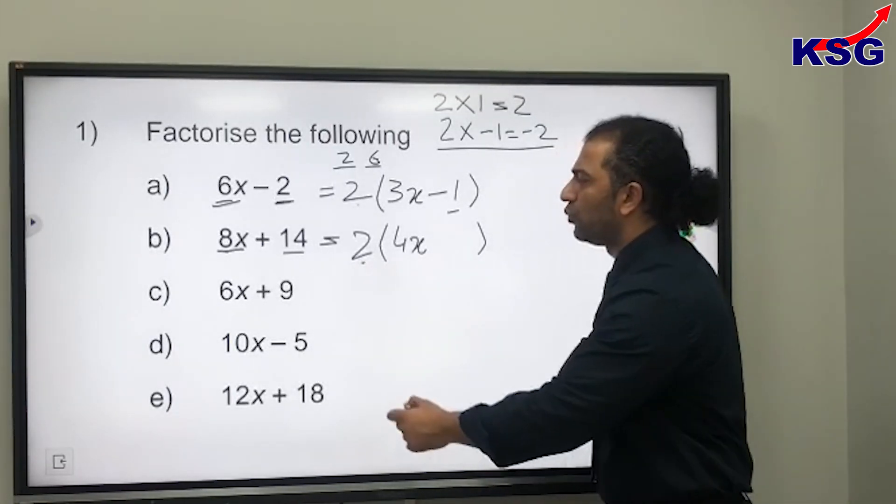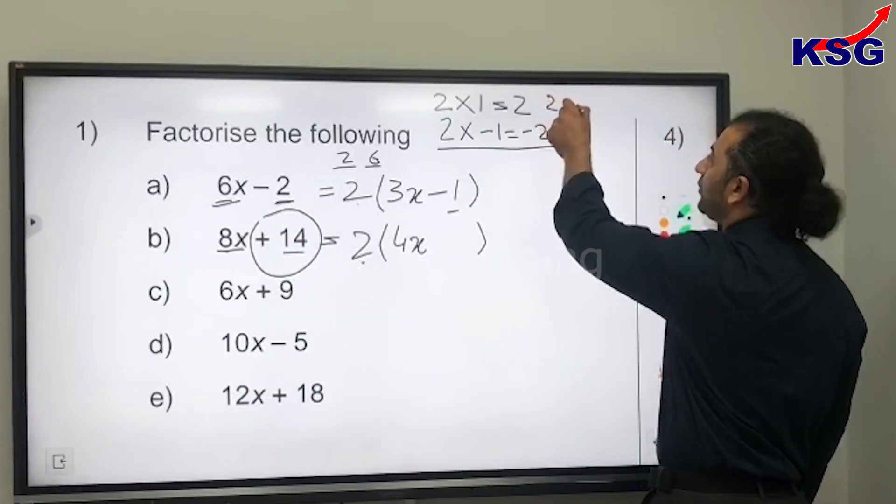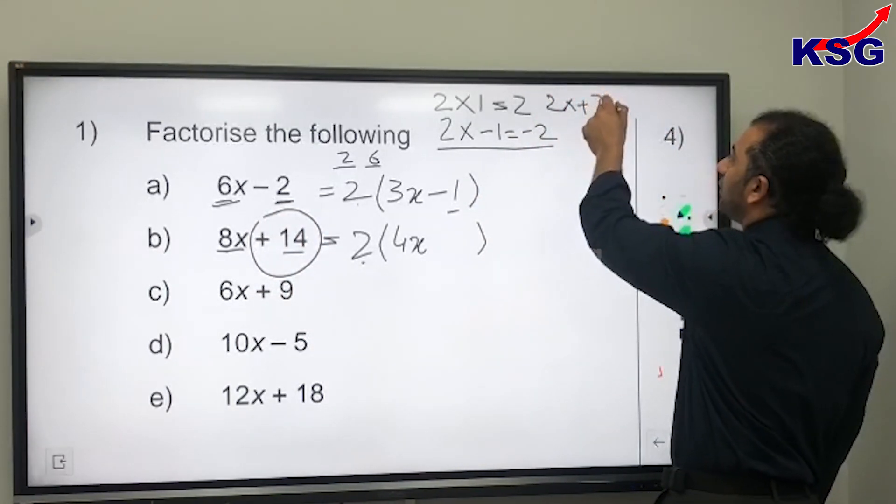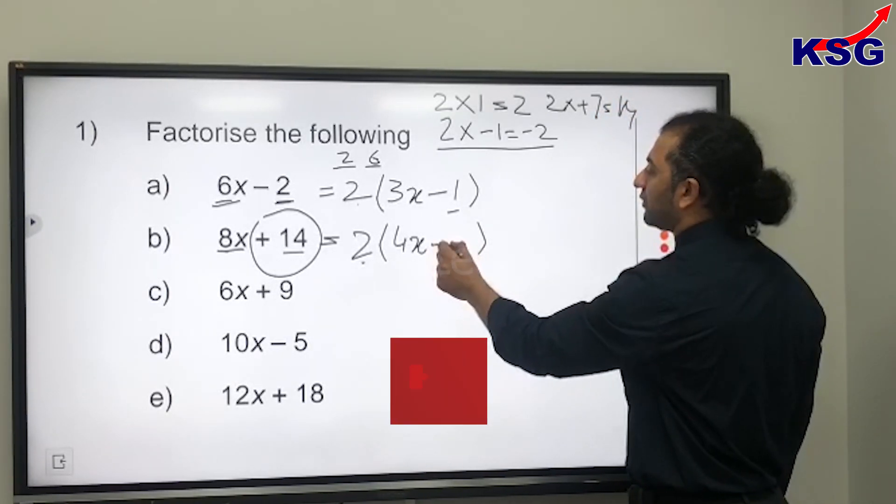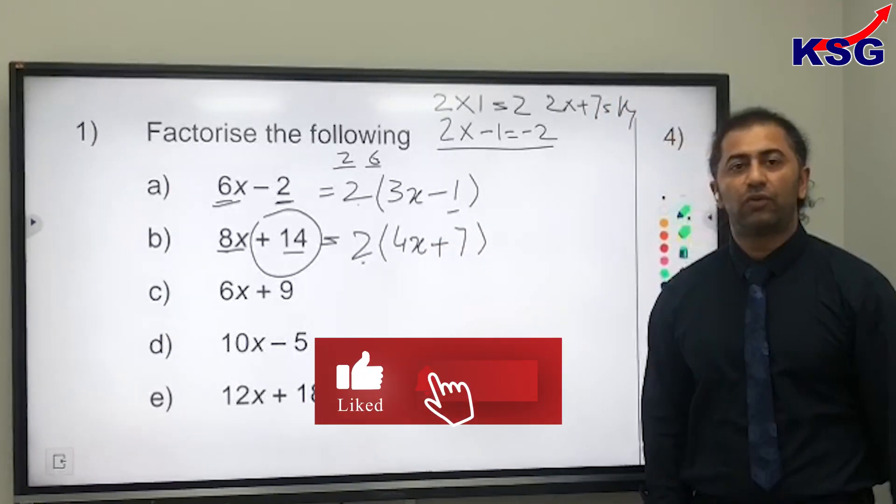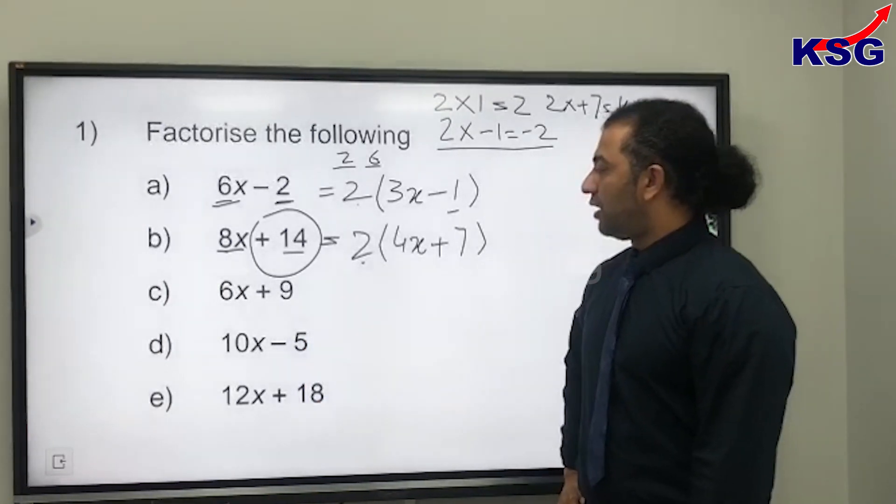Third step: what do we multiply with this 2 to get plus 14? We have 2 times plus 7, that gives us plus 14. So plus 7 goes in the bracket. That's how we factorize—we put them back into the brackets. Thank you.